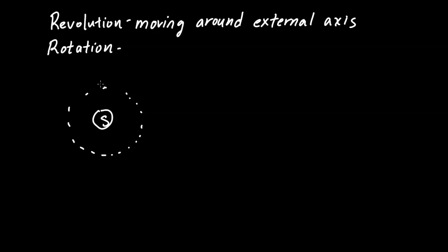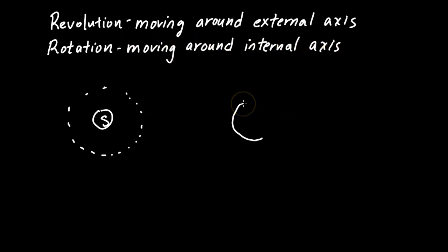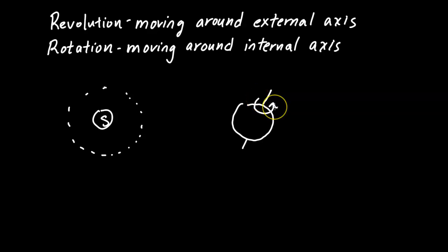Rotation is moving around an internal axis. An example of this would be the Earth rotating around its own axis — that is an example of rotation.